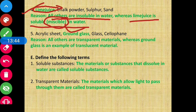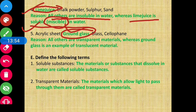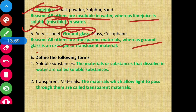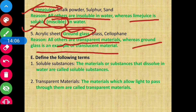Question number 5: Acrylic sheet, ground glass, glass, and cellophane. The odd one out is ground glass, because all others are transparent materials, whereas ground glass is an example of a translucent material — it only partially allows light to pass through.